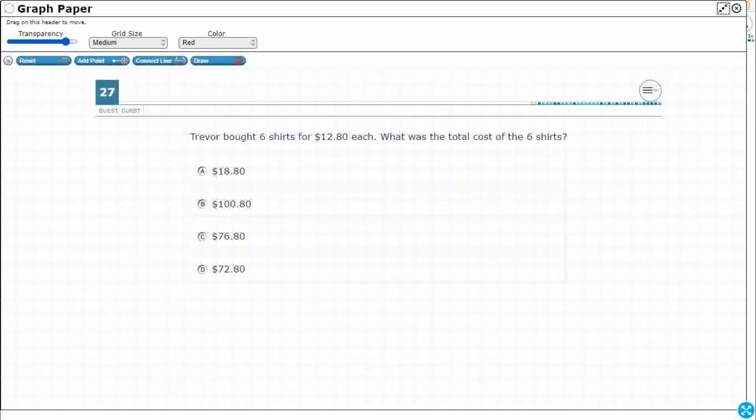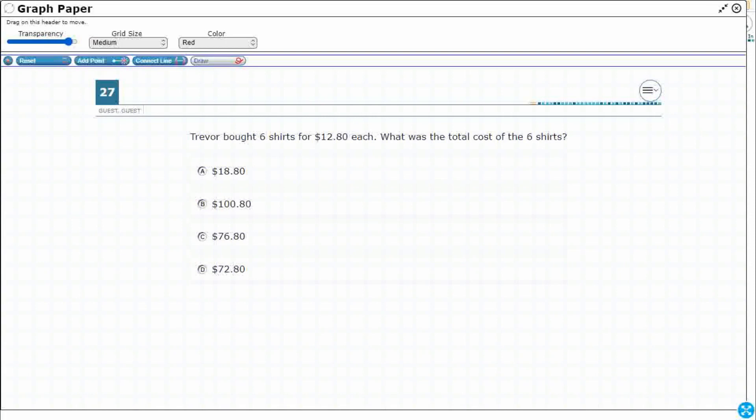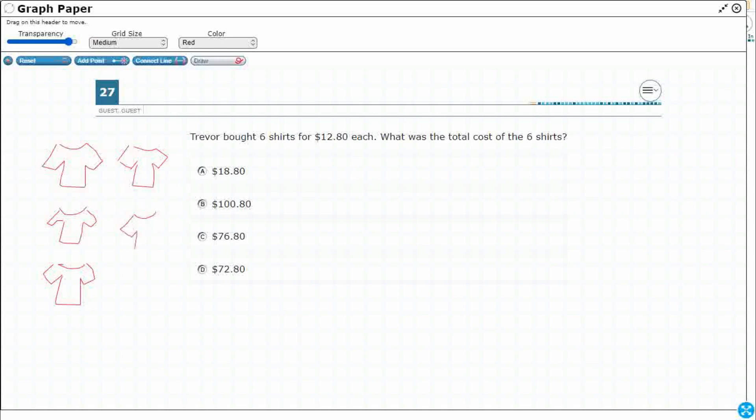So let's open up our graph draw feature so we can write all over this, increase the transparency. So six shirts, I'm going to try to make them the same, but not that great of an artist. I could have just drawn some circles and counted those as shirts. Here's the thing, I've got six sets of these and each one of these shirts is going to cost $12.80.